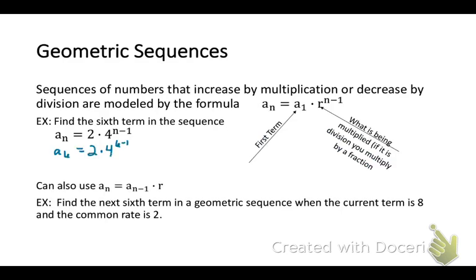Now a geometric sequence are numbers that increase or decrease by multiplication. Look at the formula here. The formula says a sub n equals our first term, a sub 1, times r, which is the multiplier or rate, raised to the n minus 1.